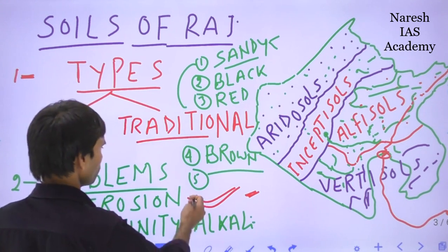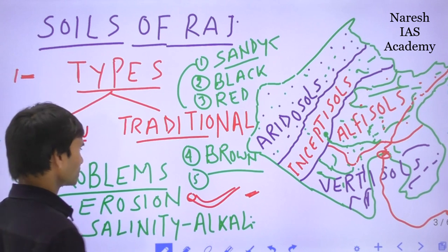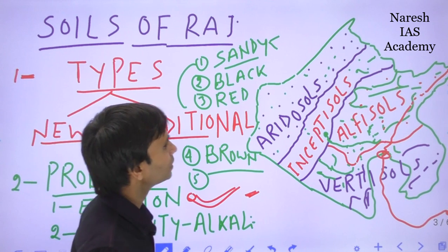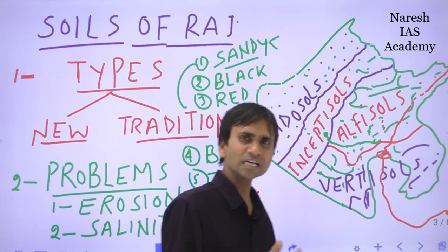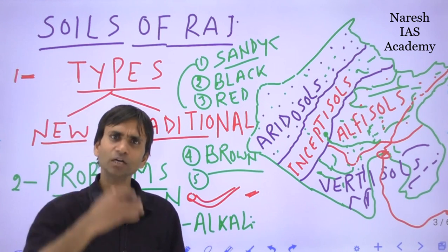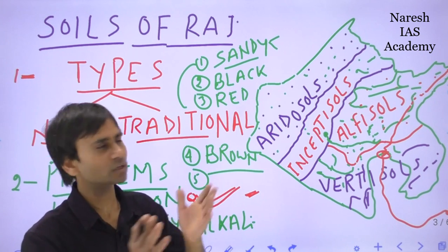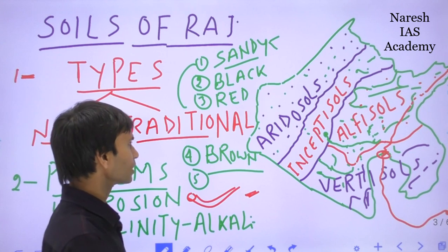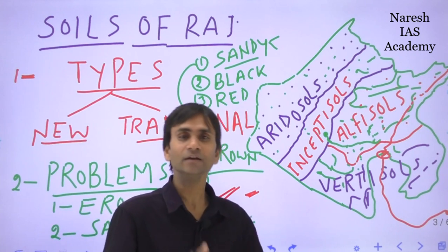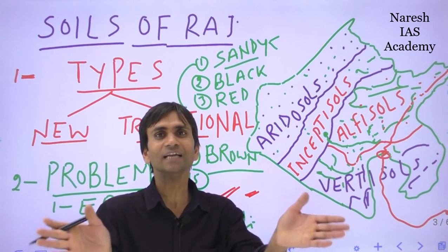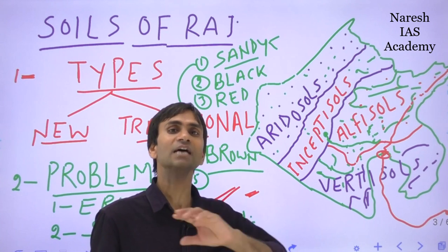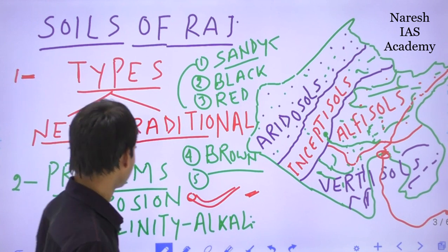This is one of the most serious problems in Rajasthan. However, the government is taking many steps - the state government and the union government are providing technical and financial support, and many methods are being used to protect against soil erosion. These methods will be discussed in another video.